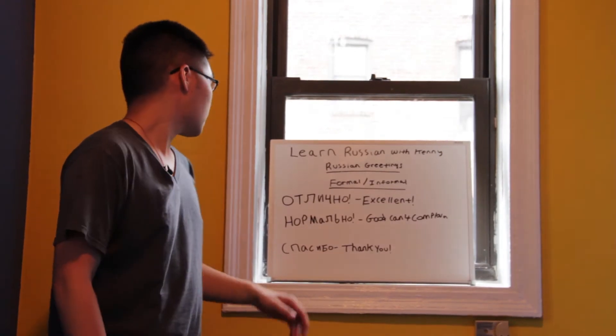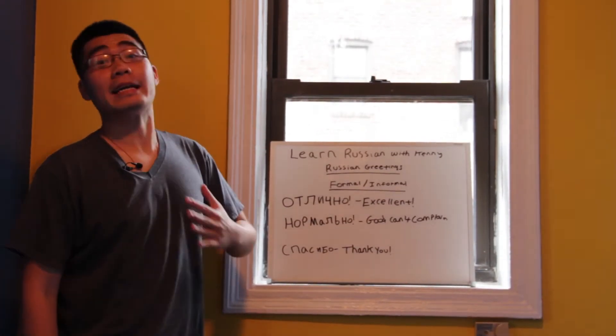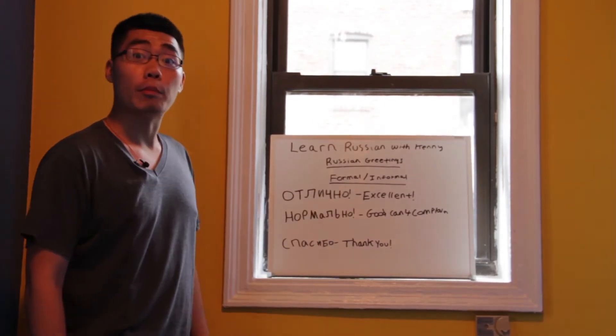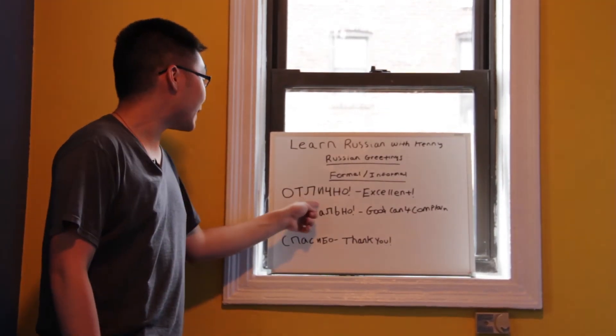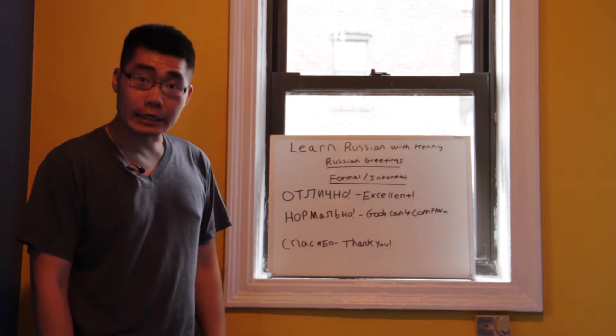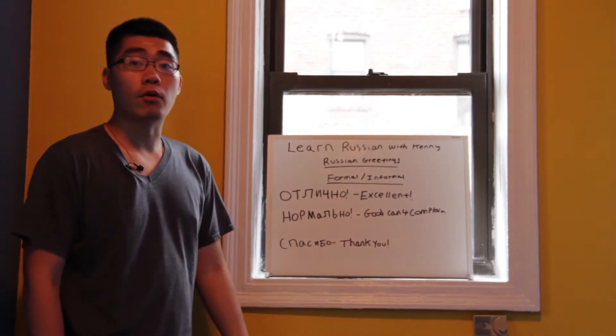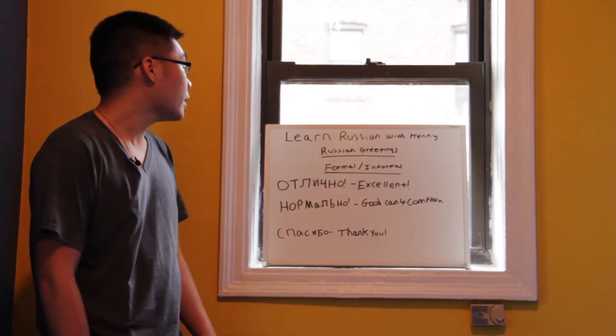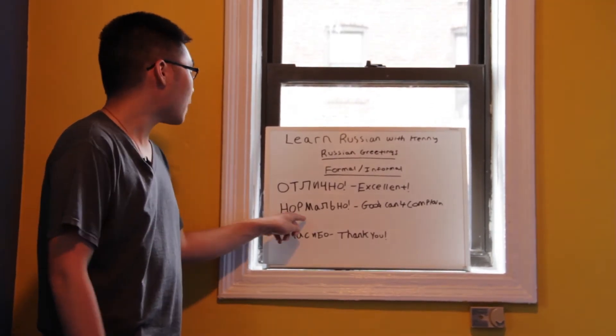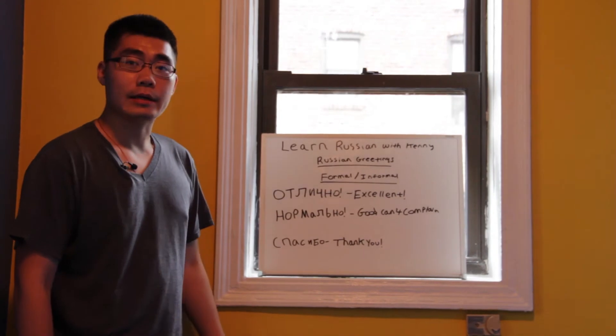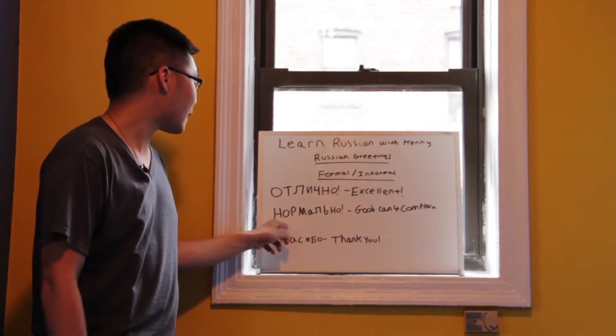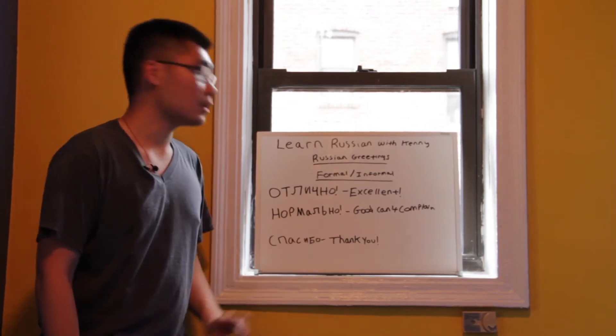The phrase for Excellent, I'm excellent, is simply АТЛИЧНА. Repeat after me. АТЛИЧНА. АТЛИЧНА. And the phrase for Good, can't complain, everything good, in Russian they would say НАРМАЛНА. НАРМАЛНА. Repeat after me one more time. НАРМАЛНА. Excellent.